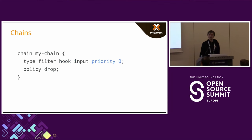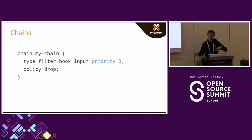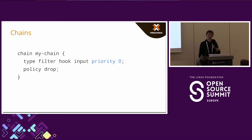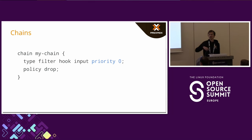You can also give a priority. With IP Tables, you only had one base chain at every hook like input, forward, output. But with NF Tables, you can define infinitely many chains at a hook, and the priority governs the order in which those chains get executed — the lower the priority, the earlier the chain gets executed.